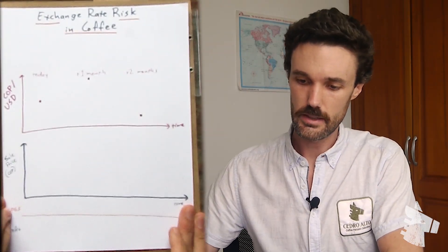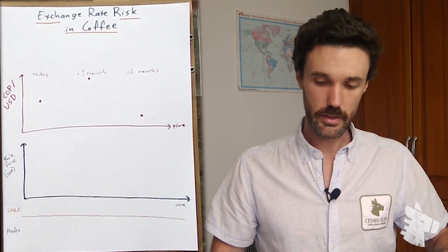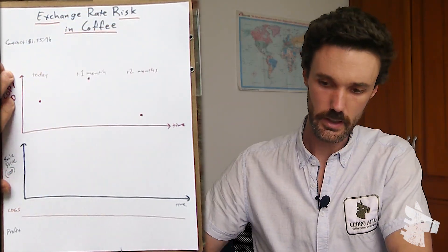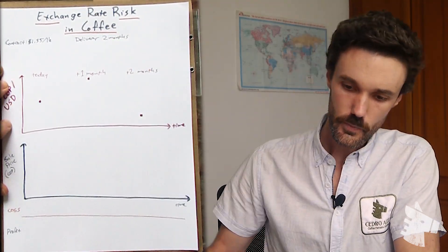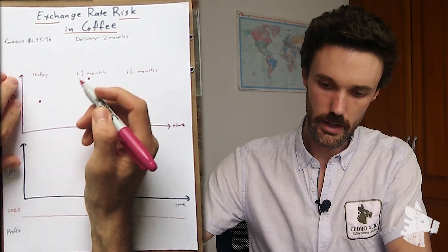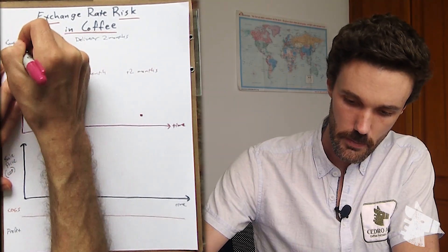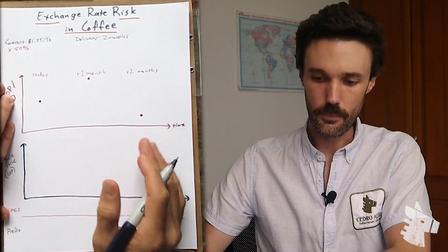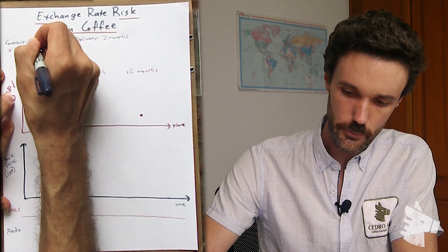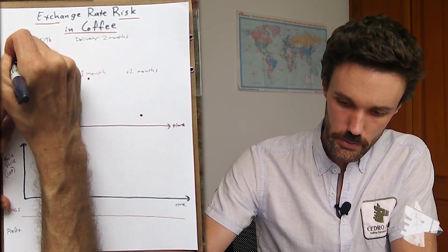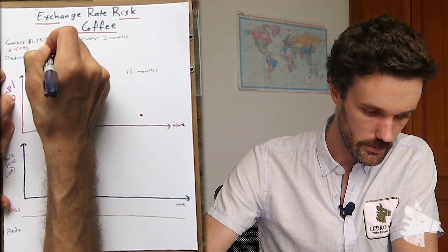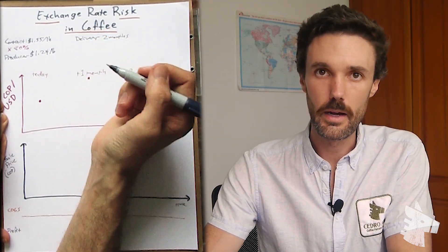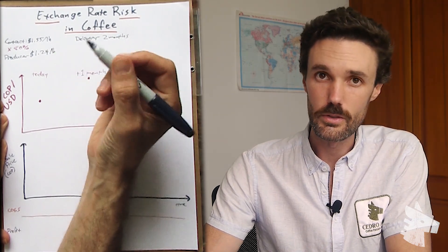So we're going to take a look at another operation. Here we have exchange rate risk in coffee. So let's say, hypothetically, we have a contract that's for $1.55 per pound green coffee, delivery in two months' time. So at this range, maybe we're going to have 80% of this will be what we have to spend on parchment. So let's say we're an exporter in this case. We're selling for $1.55 FOB, then we can pay to producer $1.24 per pound. Of course, we're not going to pay producers US dollars per pound. We're going to pay producers Colombian pesos per kilo of parchment.